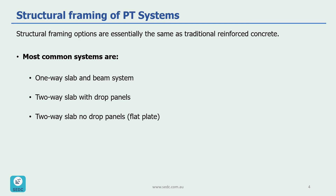The second most economical option is two-way slab with drop panel, and the least economical option is two-way slab with no drop panels, or flat plates. These have usually the highest post-tensioning and reinforcement rate and often require punching shear reinforcement.